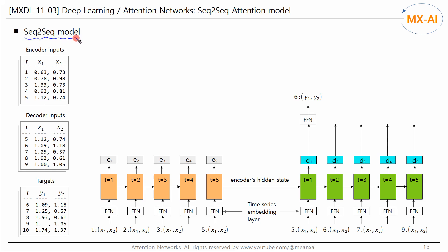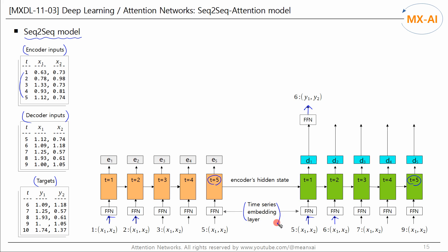The sequence-to-sequence model we looked at in the last two videos is as follows. Each subset of input data consists of five sequential data points, and the recurrent layers of the encoder and decoder consist of five time steps. Encoder inputs are fed into the encoder, decoder inputs are fed into the decoder, and the targets are output to the output layer. This time, let's add a time-series embedding layer to the input layer — we add a regular feedforward layer here for the embedding.